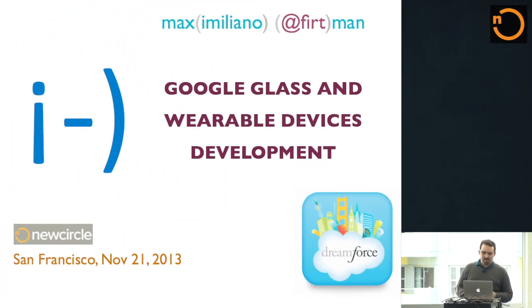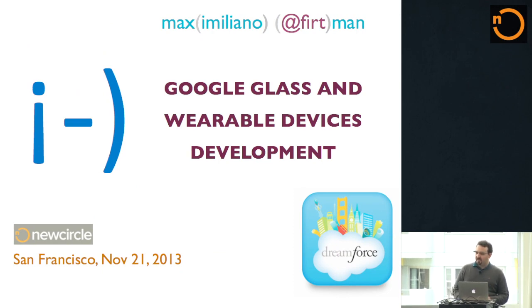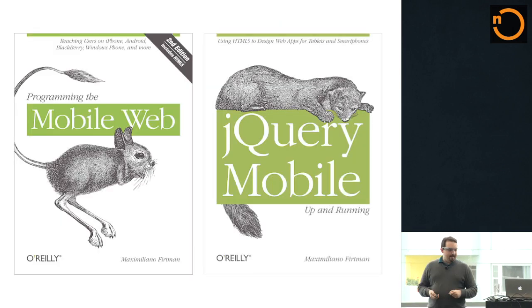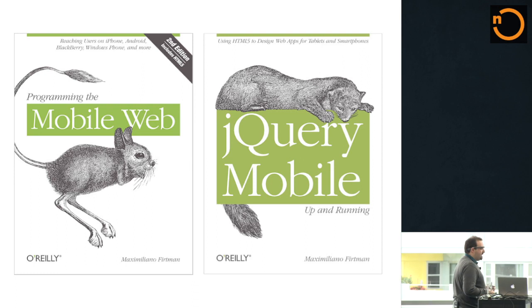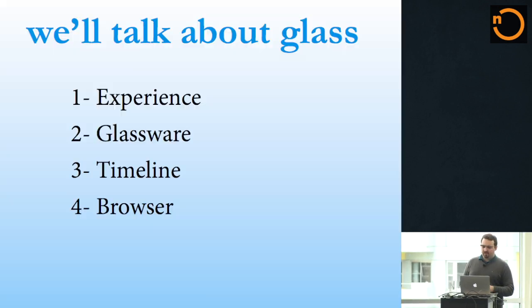My name is Maximiliano — you can call me Max. I'm from Argentina. I have been doing web development and mobile development since 1995, so a long time ago. I'm also a trainer, doing training for New Circle. They have a booth there so you can go and see what cool trainings they have. I am the author of two books from O'Reilly Media: Programming the Mobile Web and jQuery Mobile.